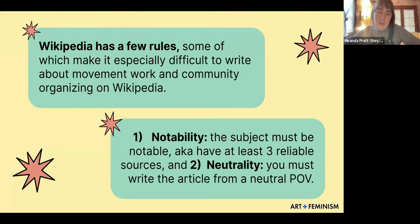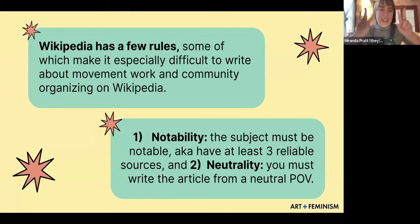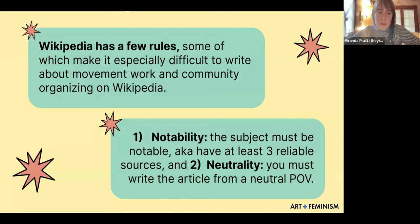Number two is neutrality — you must write the article from a neutral point of view. But if a subject or a person is not covered because they are oppressed, that's not neutral, even if the article claims to present both sides. So we hold these Wikipedia rules as things we can also poke at and try to work around.